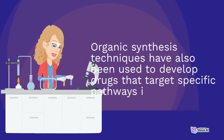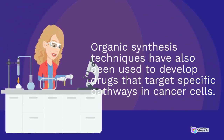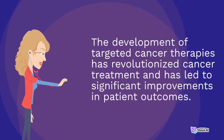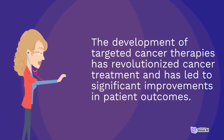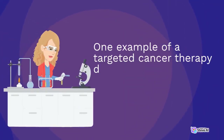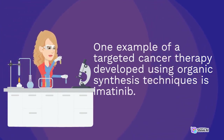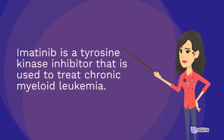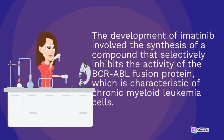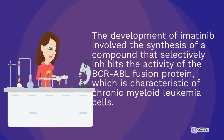Organic synthesis techniques have also been used to develop drugs that target specific pathways in cancer cells. The development of targeted cancer therapies has revolutionized cancer treatment and has led to significant improvements in patient outcomes. One example is imatinib, a tyrosine kinase inhibitor used to treat chronic myeloid leukemia. Its development involved the synthesis of a compound that selectively inhibits the activity of the BCR-ABL fusion protein, which is characteristic of chronic myeloid leukemia cells.